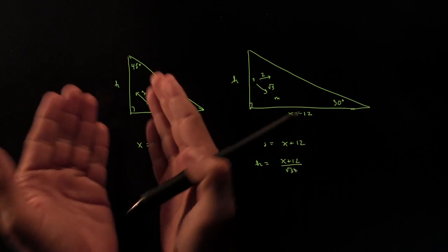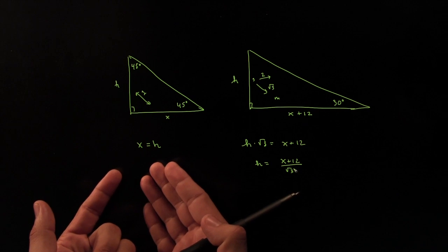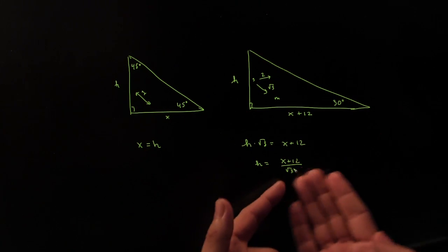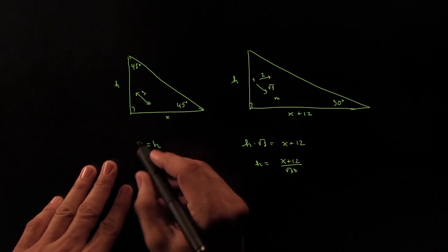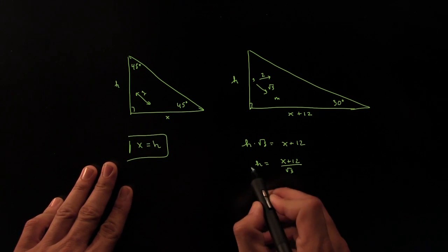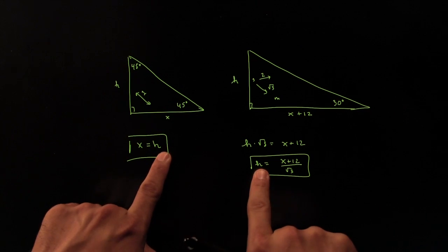Now wait a minute. On this hand, we have that the height is equal to X. On the other hand, we have that the height is equal to this thing. But it's the same height, so the two heights must be equal to each other. This height and that height must be equal to each other.